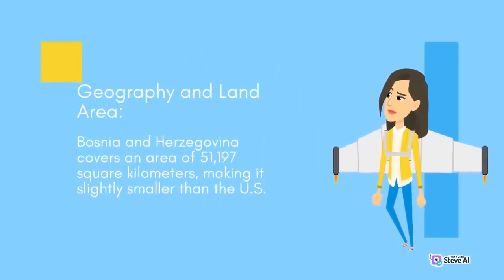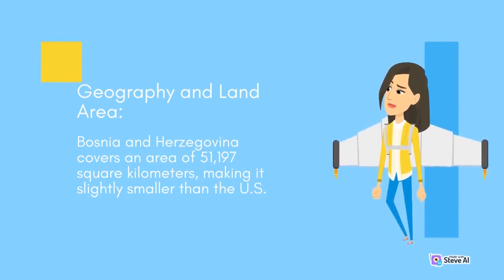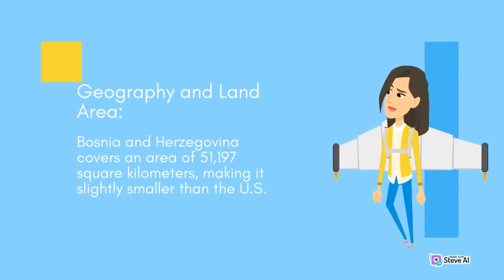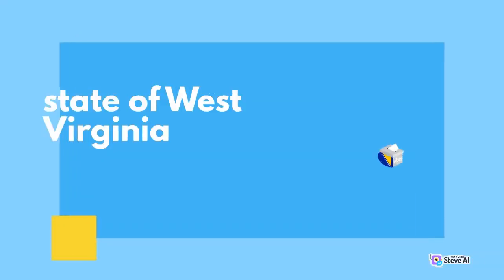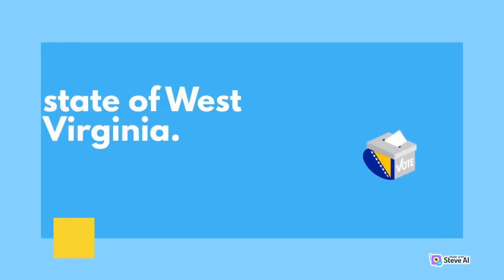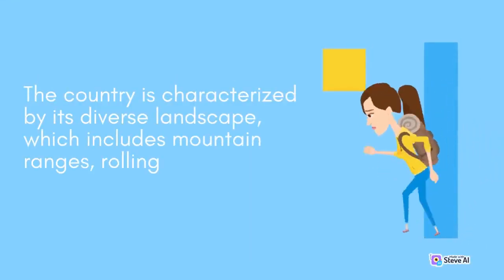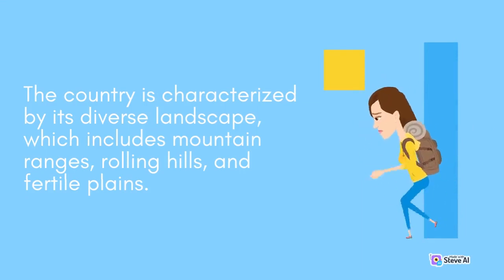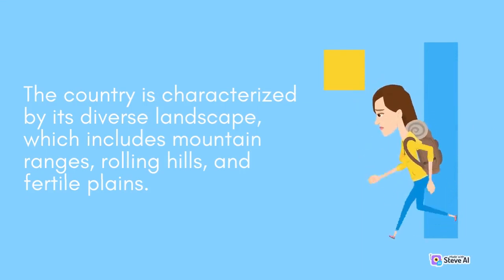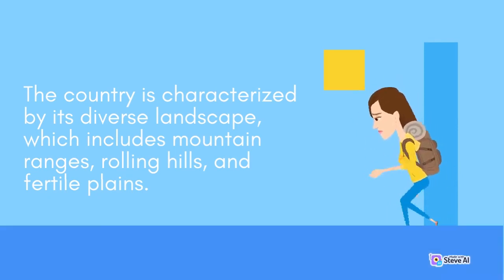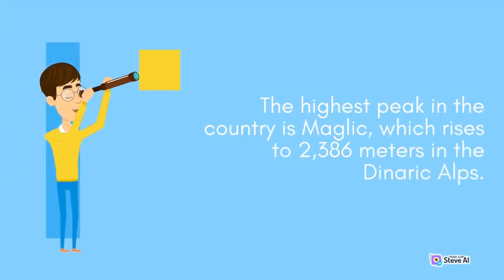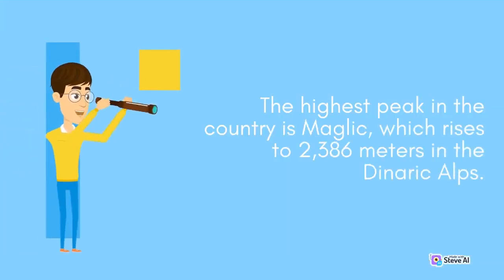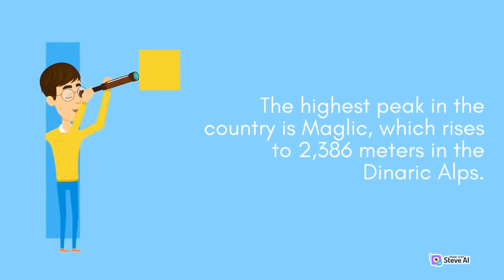Bosnia and Herzegovina covers an area of 51,197 square kilometers, making it slightly smaller than the U.S. state of West Virginia. The country is characterized by its diverse landscape, which includes mountain ranges, rolling hills, and fertile plains. The highest peak in the country is Maglić, which rises to 2,386 meters in the Dinaric Alps.